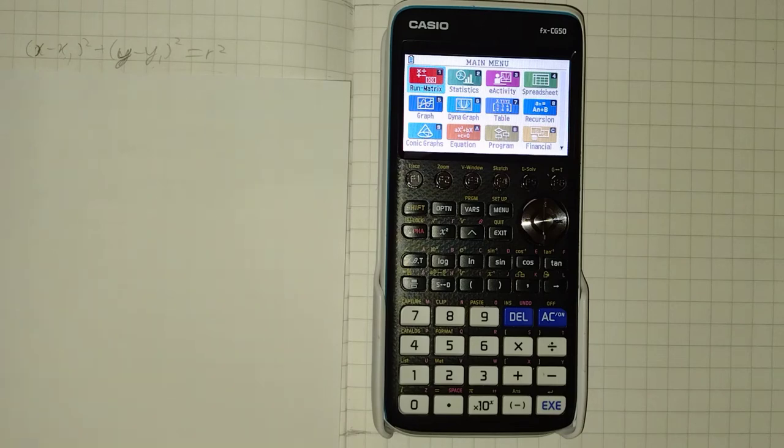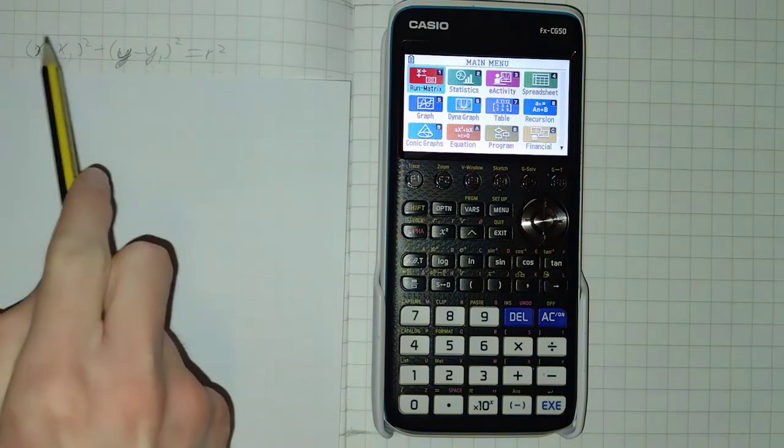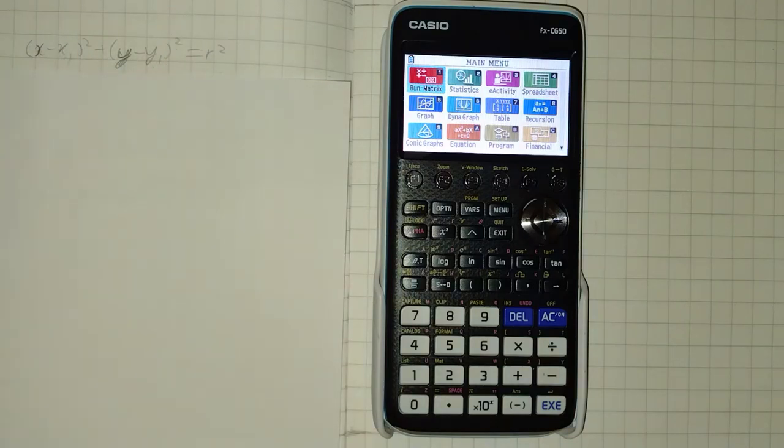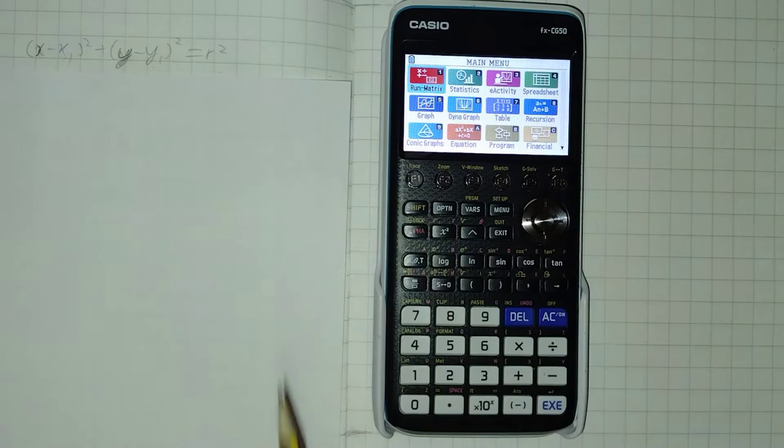Hello, in this video I'm going to go over how to graph a circle in the form x-subtract x1 squared plus y-subtract y1 squared equals r squared on the Casio fx-CG50 graphing calculator.